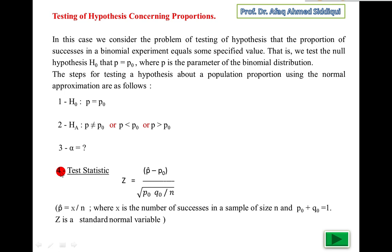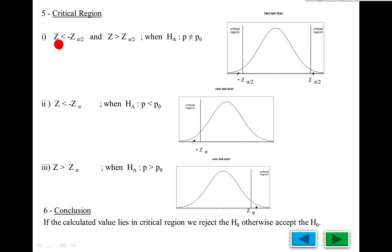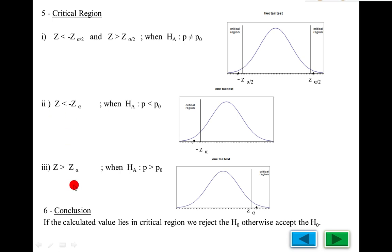The next step is the critical region, same as the testing of hypothesis for one population mean. But here we consider the alternate hypothesis p not equal to p₀. For a two-tail test, the table value is z at alpha over 2. The calculated z value is compared to the table value. If the alternate is not equal, the left-hand side will be negative and the right-hand side positive. If the calculated value lies in the critical region, we reject H₀; otherwise we accept H₀.